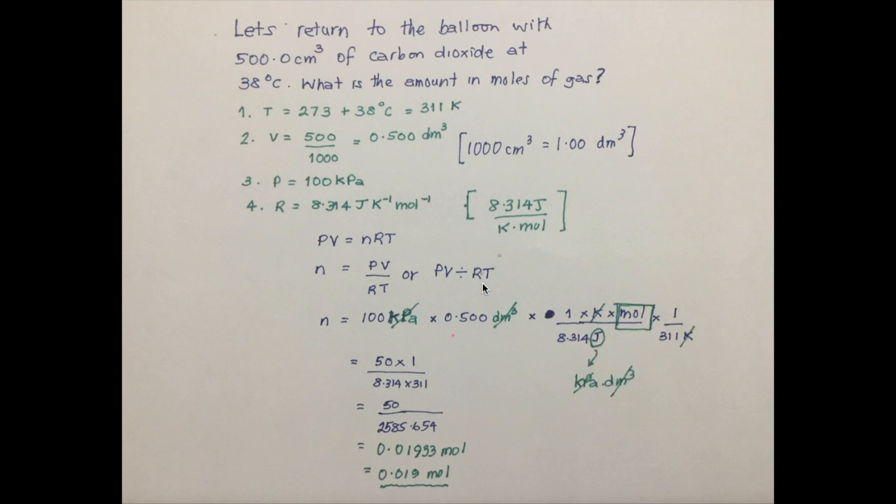Multiplied by the reciprocal of RT, which means one over 8.314 joules. And then with the joules becoming the denominator, the Kelvin and the mole would have to go into the numerator because we are finding the reciprocal. And then one would be divided by 311 Kelvin. With all of this laid out, Kelvin here would cancel with Kelvin here.